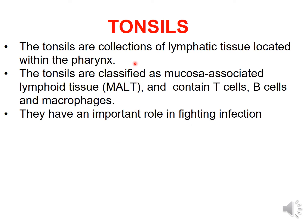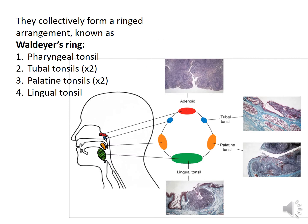The next lymphoid organ is tonsils. We have covered thymus, spleen, and lymph nodes; now we see tonsils. The tonsils are collections of lymphatic tissue located in the pharynx. They are classified as MALT (mucosa-associated lymphatic tissue), containing T cells, B cells, and macrophages. They have an important role in fighting infection. They collectively form a ring-shaped arrangement in the pharynx.